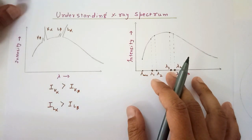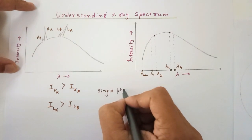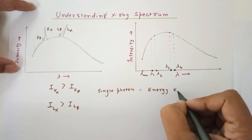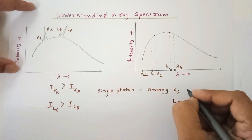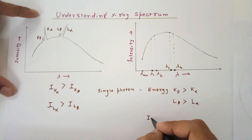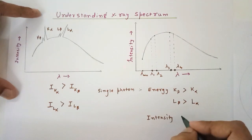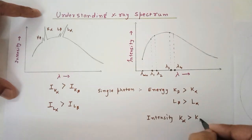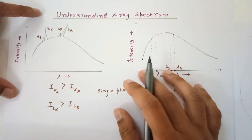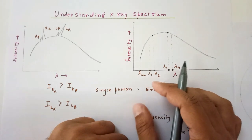To conclude: on a single-photon basis, the energy of K-beta and L-beta is larger than K-alpha and L-alpha respectively. But in terms of intensity — meaning the number of photons — the probability of forming K-alpha is larger than K-beta, and L-alpha is larger than L-beta, because neighboring electrons fill vacancies first. Hopefully you liked the explanation; please subscribe to the channel if you haven't, and thanks for watching.